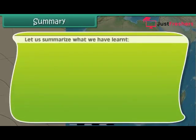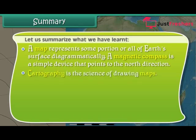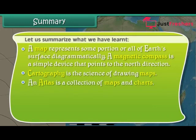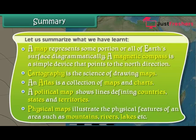Let us summarize what we have learnt. A map represents some portion or all of Earth's surface diagrammatically. A magnetic compass is a simple device that points to the north direction. Cartography is the science of drawing maps. An atlas is a collection of maps and charts. A political map shows lines defining countries, states and territories. Physical maps illustrate the physical features of an area such as mountains, rivers, lakes, etc.